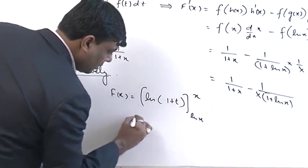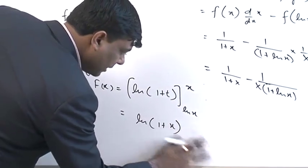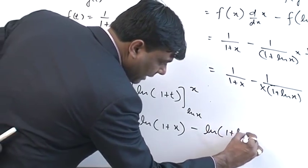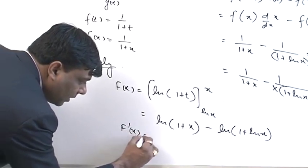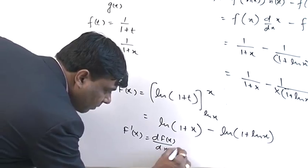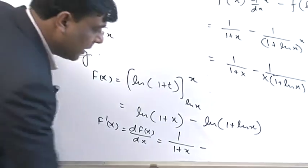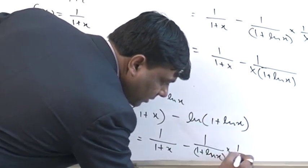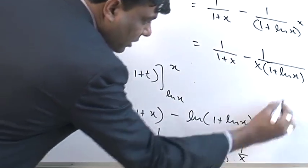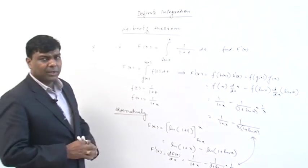Applying the limits from ln(x) to x gives: ln(1+x) minus ln(1+ln x). Now taking f'(x) = d/dx of f(x): the first part differentiates to 1/(1+x), and the second part differentiates to 1/(1+ln x) times 1/x. Both methods give the same result — they will never be different.